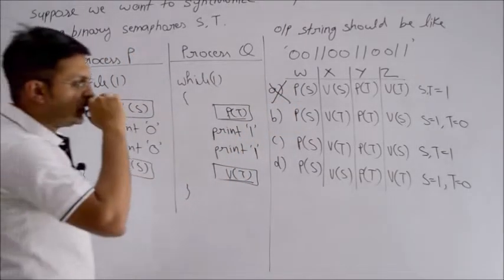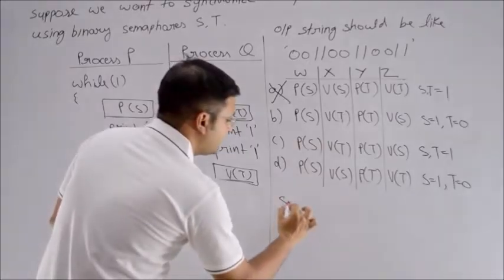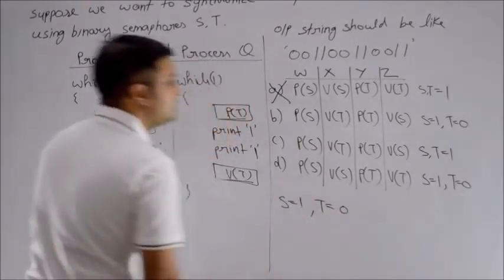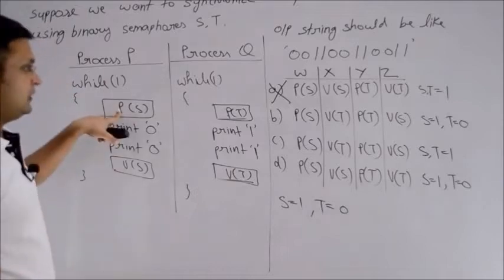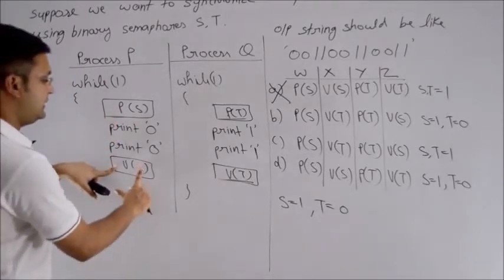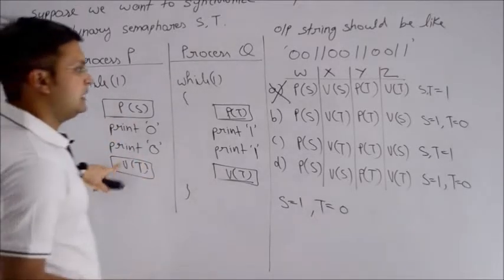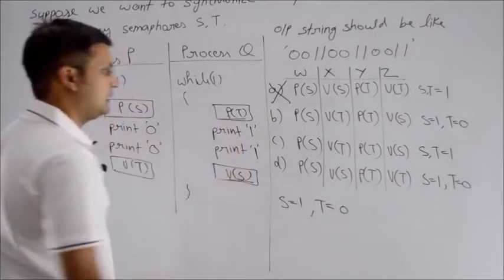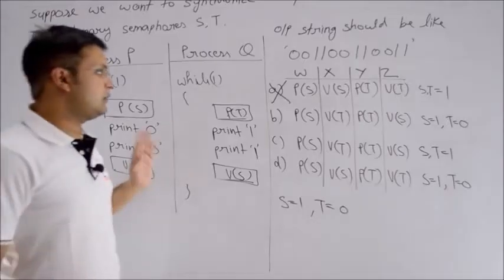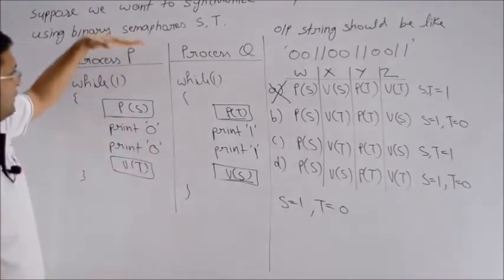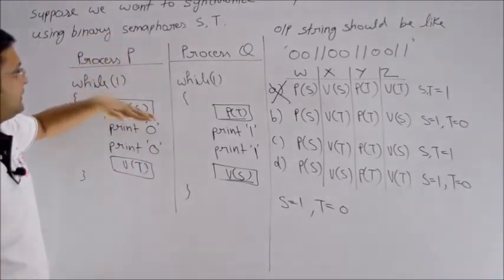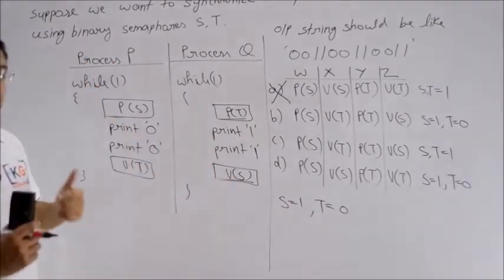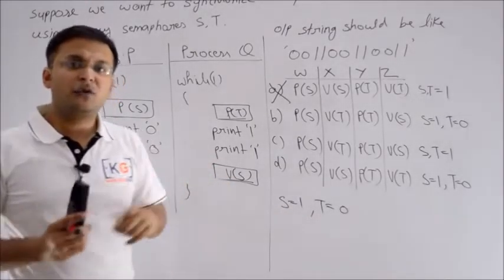Now understand this - two processes are completely independent of each other. One depends on S, the other depends on T. Both have initial value 1. Whenever it wants, this one will run; whenever it wants, that one will run. It will decrement the value, print 0 twice, increment it. These two processes can repeat this logic as long as they want.